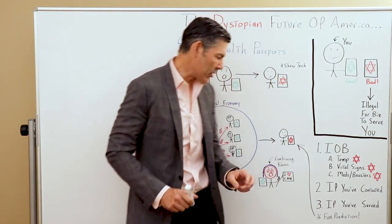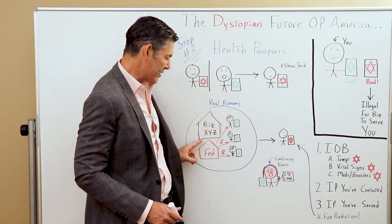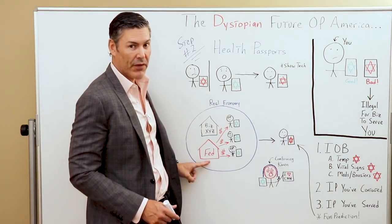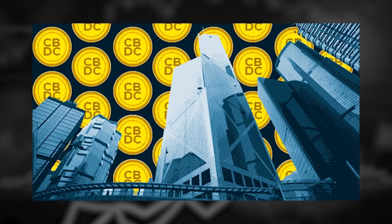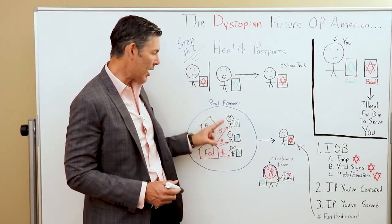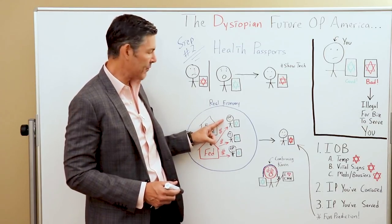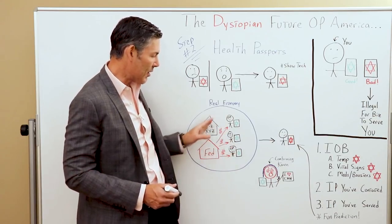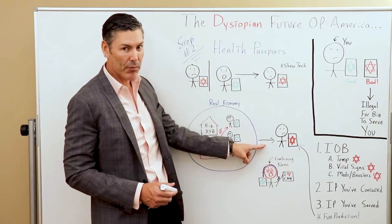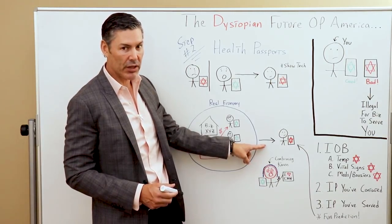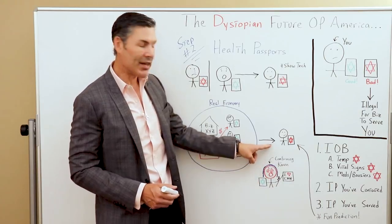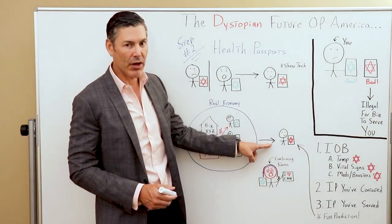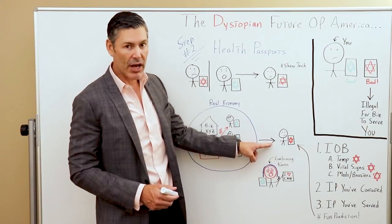So this is what the future might look like. We have businesses X, Y, Z in the real economy. We have the Fed. When the Fed is giving out UBI through their central bank digital currency, they're only going to give it to the people with green stars — those approved by the government who are able to participate in the economy. The people who have not been approved or haven't done exactly what the government tells them to do get excommunicated from society, until they do whatever is required by the government to get that green star again.